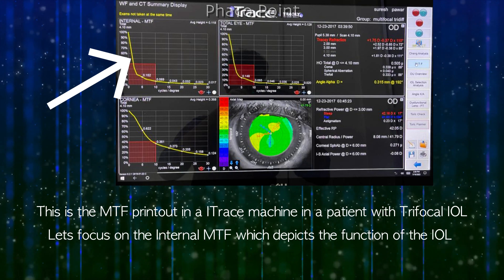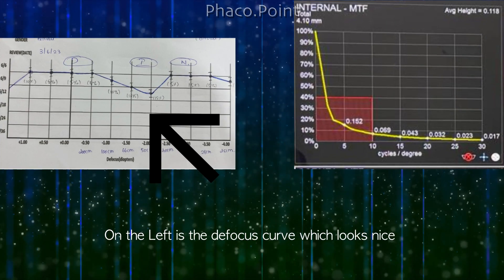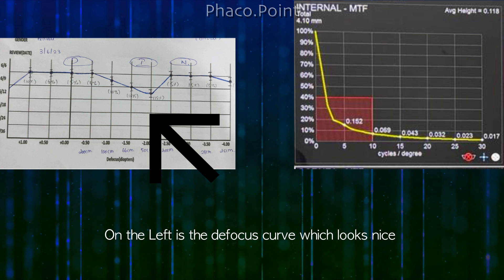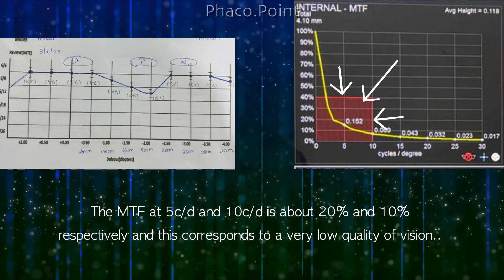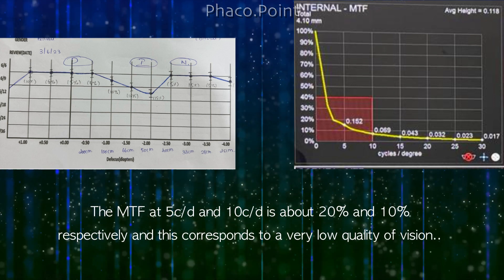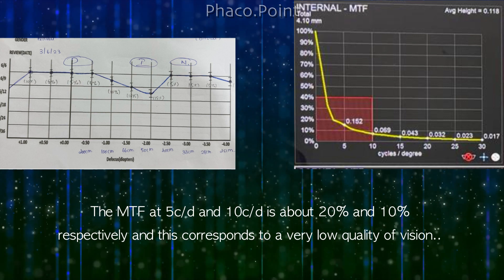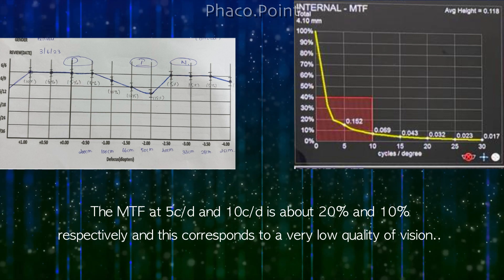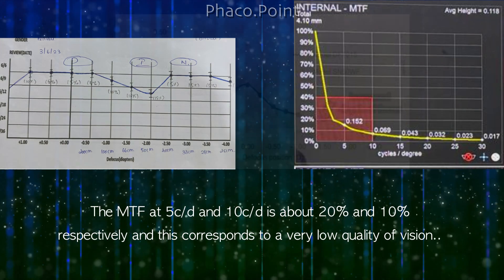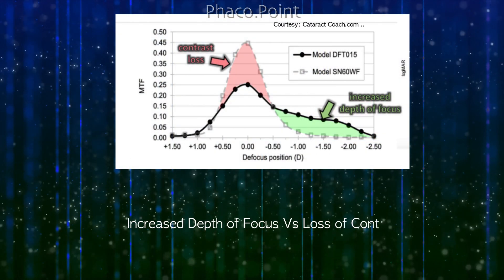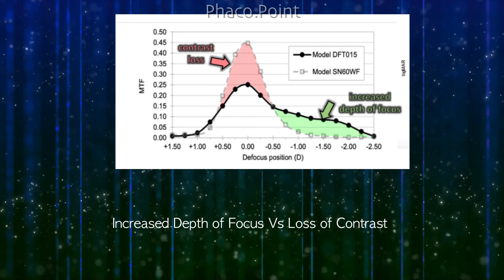This is the MTF printout of an eye trace machine in a patient with a trifocal IOL implanted. Focusing on the internal MTF function depicting the intraocular lens: on the left is a defocus curve which looks nice and rosy, but the modulation transfer function tells a totally different story. The MTF at 5 cycles per degree and 10 cycles per degree is only about 20% and 10% respectively for this particular multifocal, corresponding to very low quality of vision. The range of vision and visual acuity seem good; however, the patient's contrast sensitivity is poor. What these lenses gain in increased depth of focus or multifocality is always at the expense of losing contrast and visual quality.